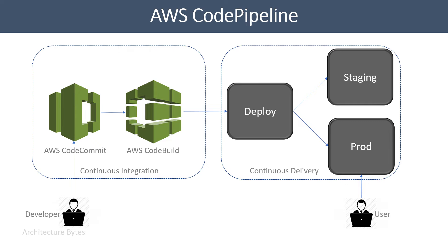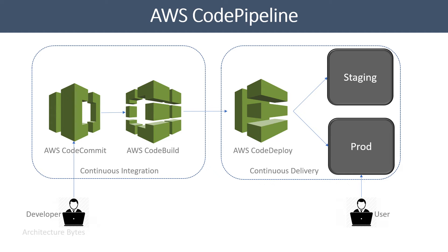AWS CodeBuild is a service and action provider that can compile code, run tests, and produce packages ready to deploy. As part of its setup, you will be required to write a buildspec.yaml file. We will learn more about it soon.